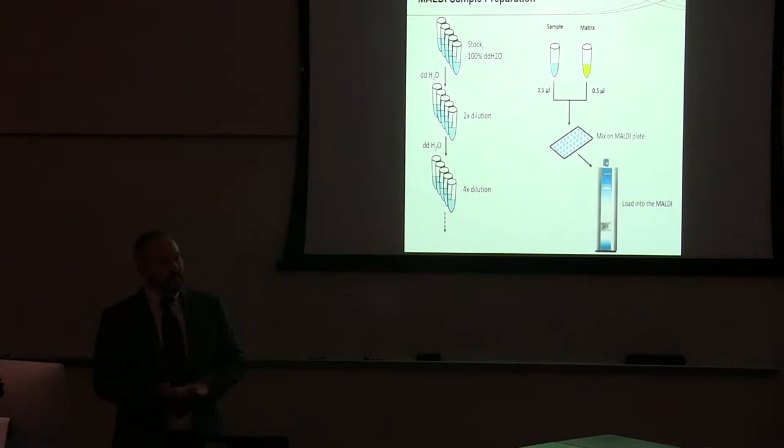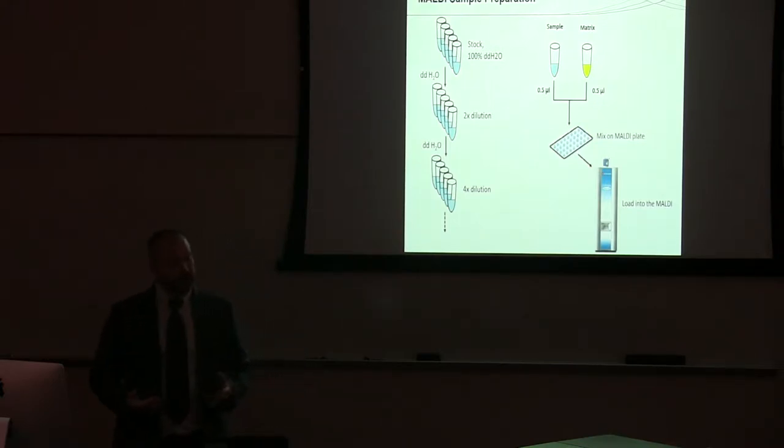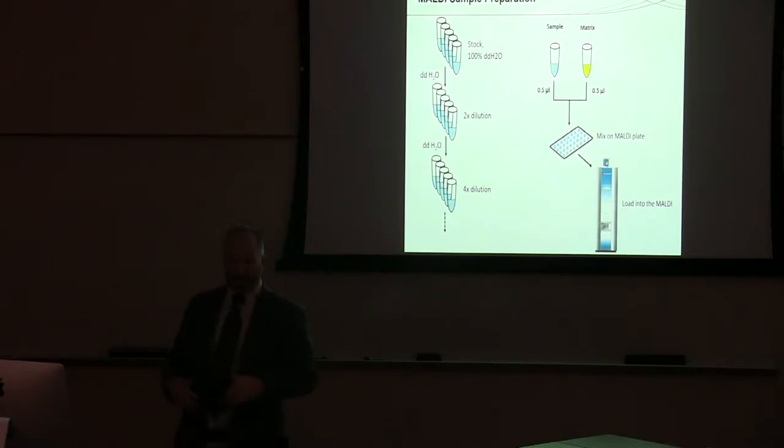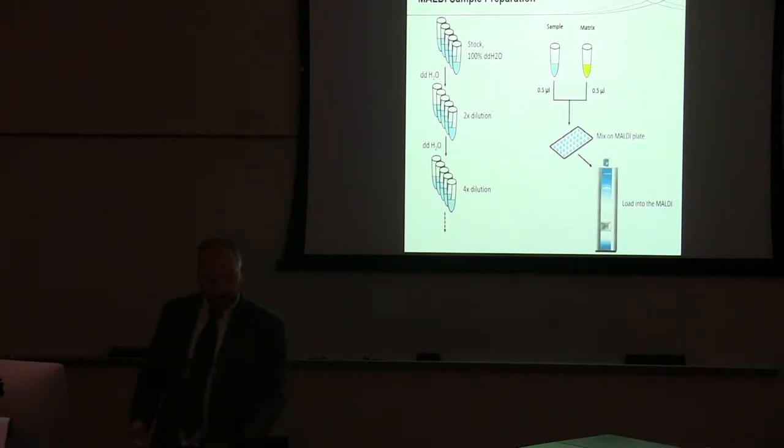So, here with sample preparation for these high mass applications, you're typically going to do a serial dilution of your samples to try to optimize the conditions for analysis. You're then going to take these dilutions, mix them with matrix. You can either pre-mix them in a tube, or you can mix them on a plate. And just as illustrated before, you then load the plate into the instrument for analysis.